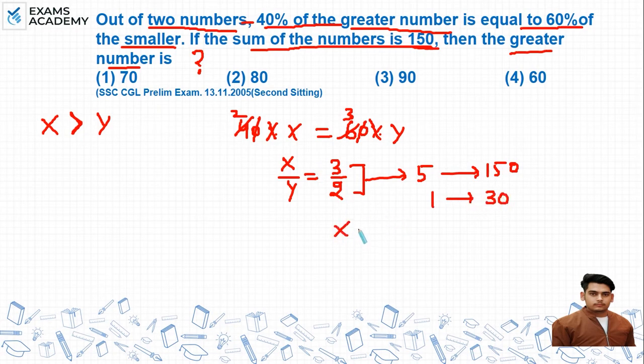Greater number is x. x is 3 units. So 3 units of our value is 3 into 30. This is 90. So, the greater number is 90, which is option number 3.